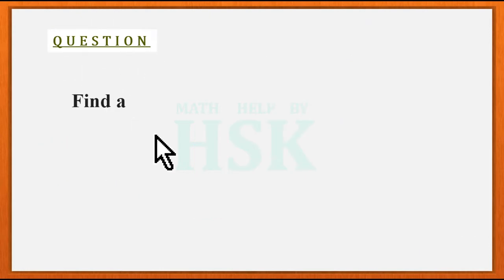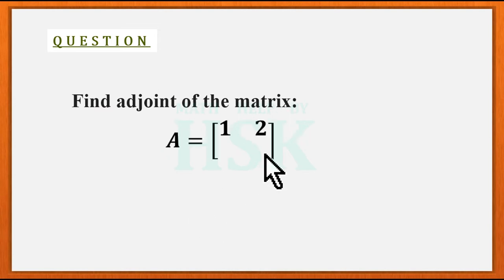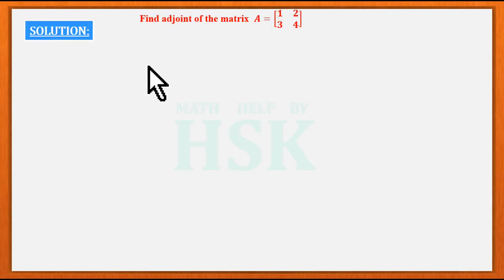Hello friends, the question is find the adjoint of this matrix A given by [1, 2; 3, 4]. To solve this question, first of all we take the matrix.